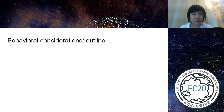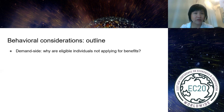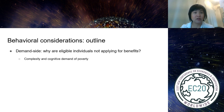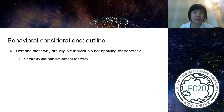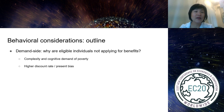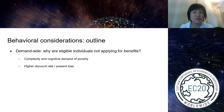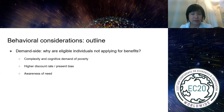This frames what we want to discuss from a behavioral perspective. On the demand side, why is demand so low? Why are eligible people not applying? We'll talk about the complexity of forms and processes, the cognitive demands of poverty, whether poverty affects cognitive functioning, whether poor people have higher present bias and discount the future more, and whether they are aware of their needs.